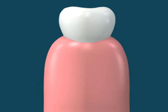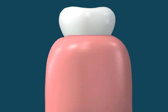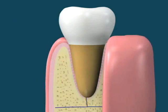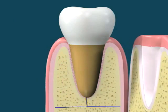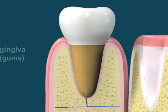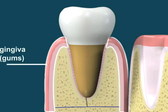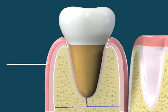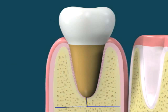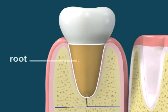The dissected view of the tooth is now visible. The gingiva, or gums, consists of the mucosal tissue that lays over the alveolar bone. They surround the teeth and provide a foundation seal around them.